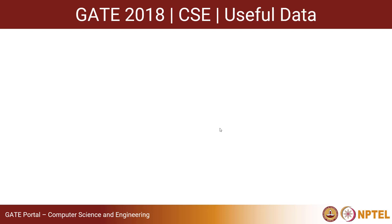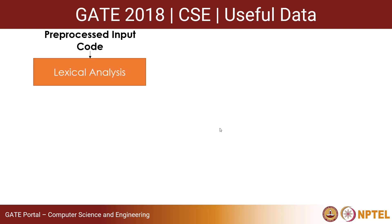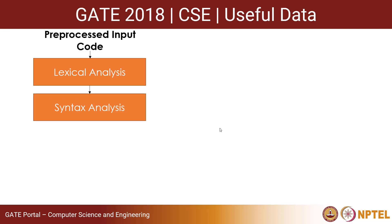Let us look at some useful data before solving this question. We must first understand the phases of a compiler. The input code goes to a preprocessor, which removes white space, does macro expansion, and header file expansion. After that it goes to lexical analysis, which reads the program character by character and divides it into a stream of tokens. The stream of tokens is fed to the syntax analyzer, which uses a context free grammar to generate a parse tree.